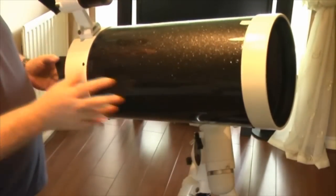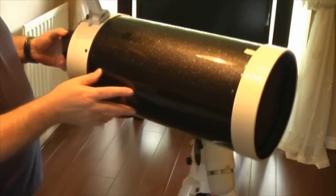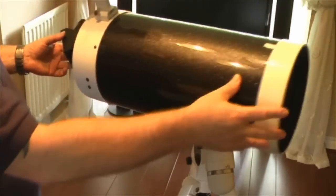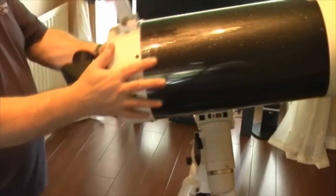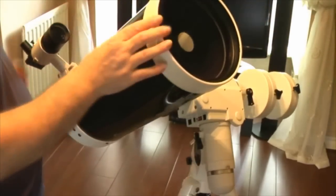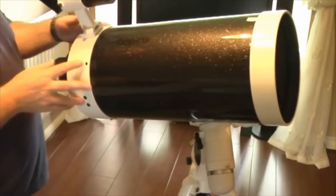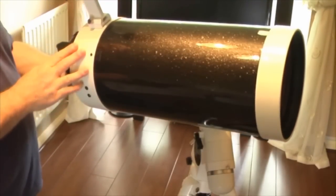That's the equivalent of having a telescope 2700 millimeters long, that's the focal length of the Mach 180 which equates to an F15 telescope. Now what that means is that it's very good for planetary and lunar viewing, it just gives very high contrast and lovely sharp images.